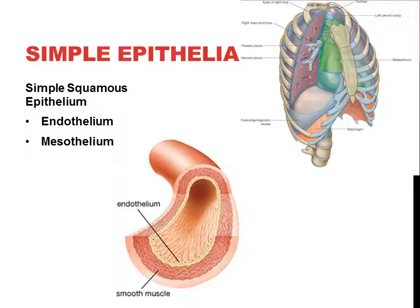There are two types of simple squamous epithelia: endothelium and mesothelium. Endothelium lines the entire cardiovascular system — the arteries, and even the capillaries, which are just simple squamous epithelium because they're the site of gas and nutrient exchange. Mesothelium forms pleura — a single-cell sheet that covers both the organ and lines the cavity the organ is in, providing a smooth, frictionless environment for organs to move around without damage.